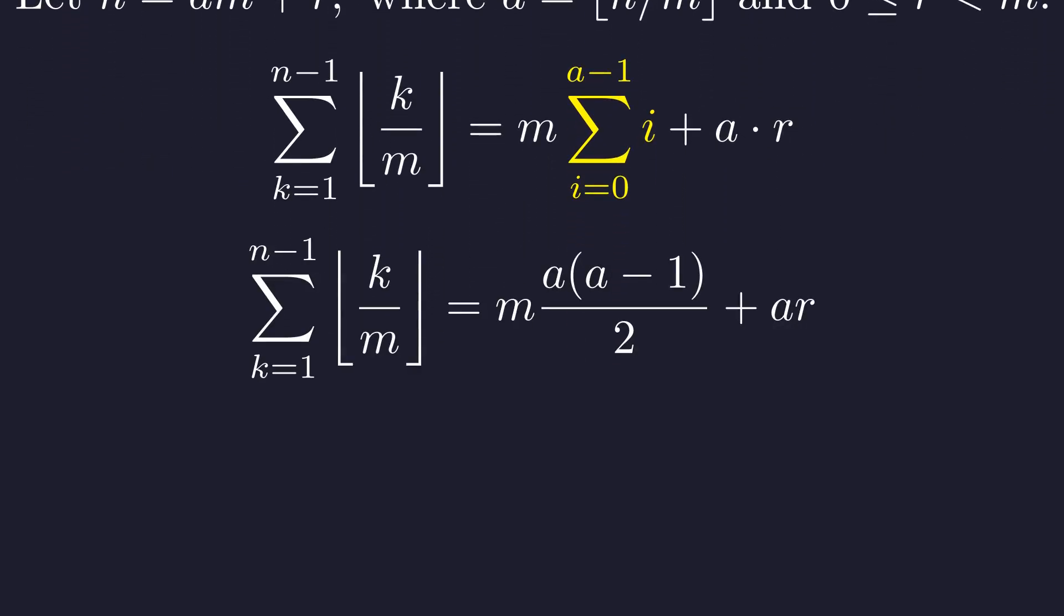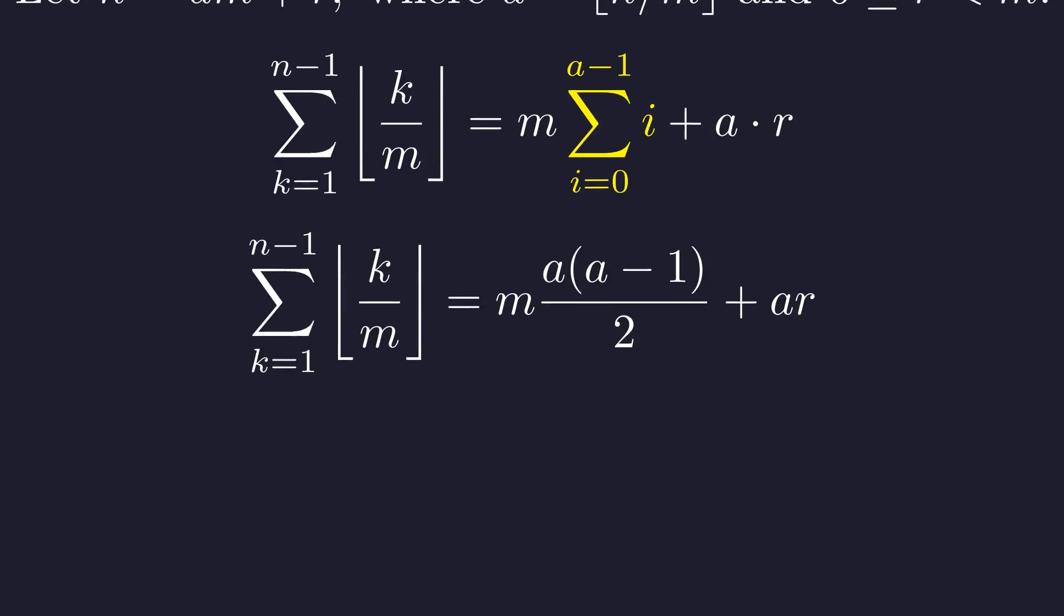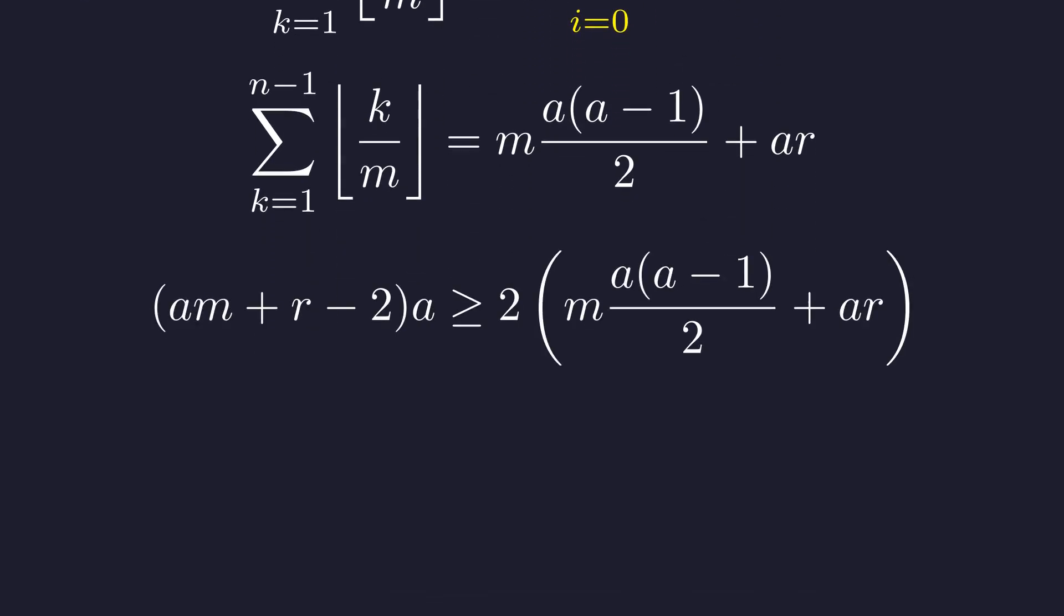Now I can use the classic formula for the sum of the first several integers: the sum 0 plus 1 plus 2 up to a minus 1 is just a times (a minus 1) all over 2. Now let's substitute this back into our inequality and see what happens. Plugging in n equals am plus r and our formula for the sum, we get this somewhat intimidating looking inequality.